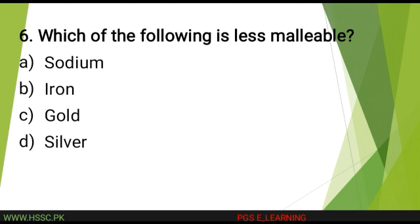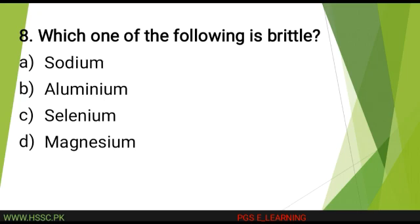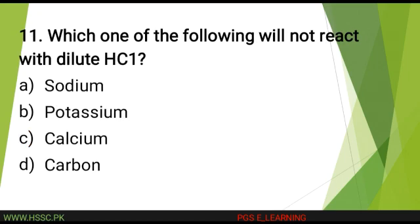Which one of the following is less malleable? The correct answer is: iron. Metals lose their electrons easily because? The correct answer is: they are electropositive. Which one of the following is brittle? The correct answer is: sodium. Non-metals are generally soft but which one of the following is extremely hard? The answer is: iodine. Which one of the following will not react with dilute HCl? The correct answer is: carbon.